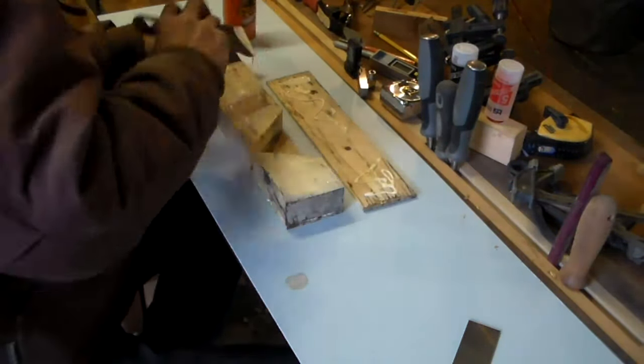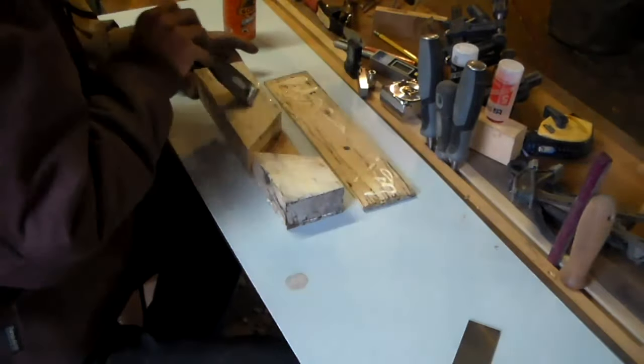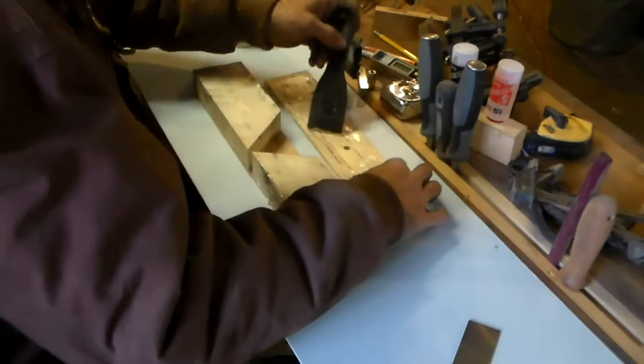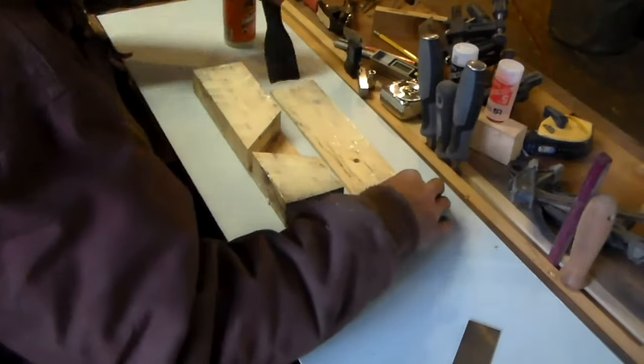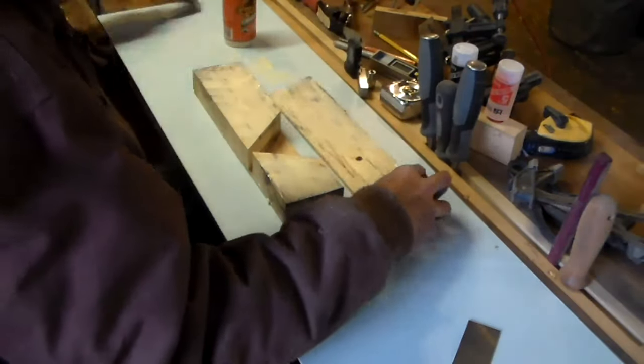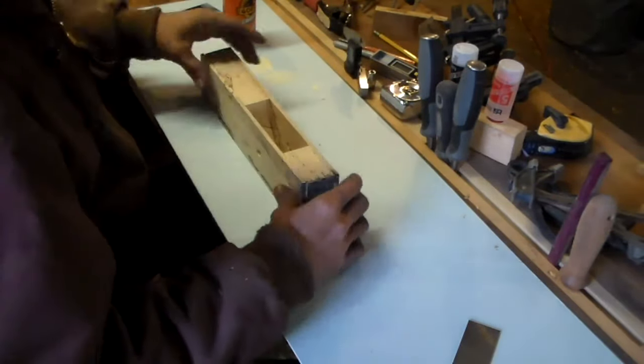I ended up taking another piece of the spalted pecan and drilling through that with a three-eighths bit. Made it a block wide enough to fit down in the opening of the plane, drilled it and then cut around it.